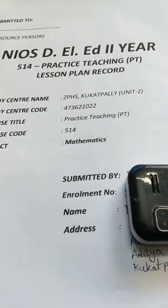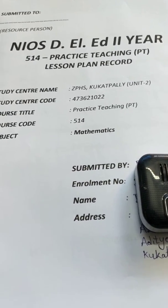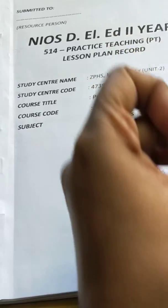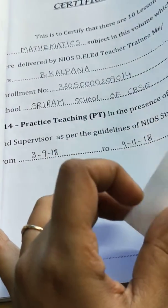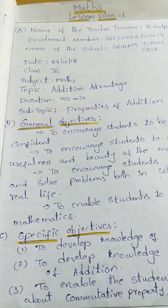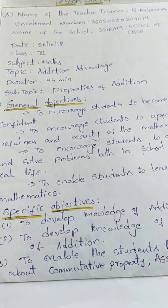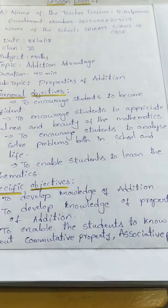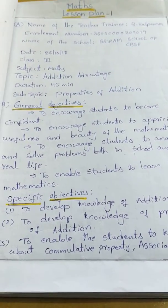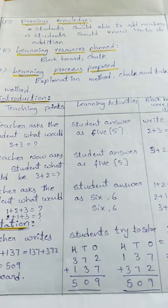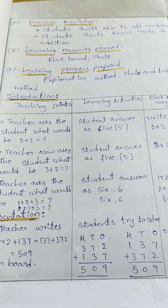This is a second-year practice teaching lesson plan record. The top subject is mathematics, this is a certificate class. Lesson plan one — the topic is addition. It covers general objectives, specific objectives, previous knowledge, and learning resources.